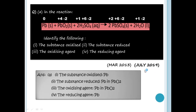We will discuss the oxidation number concept. We will discuss previous questions. In July 2019 and March 2013, we will discuss this important question: In the reaction Pb + PbO2 + 2H2SO4 giving 2PbSO4 + 2H2O, identify the substance oxidized, substance reduced, oxidizing agent, and reducing agent.